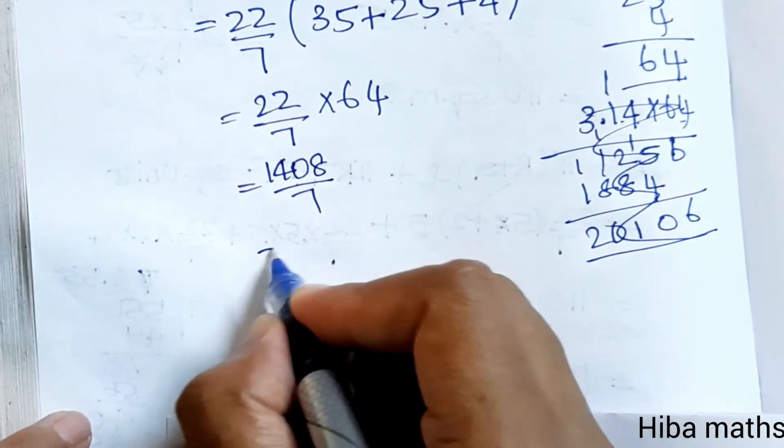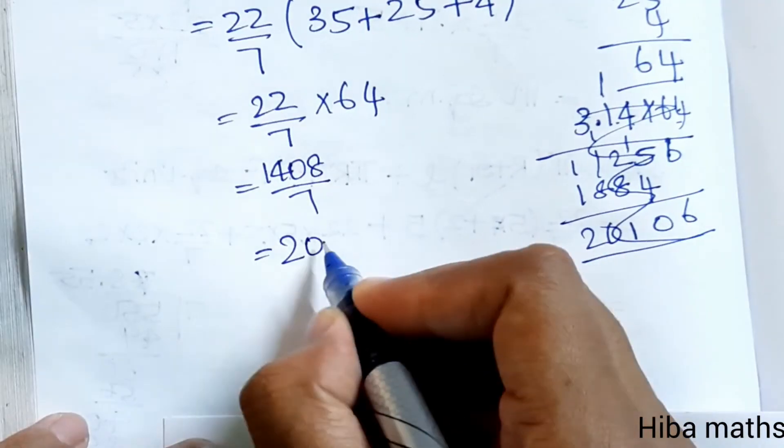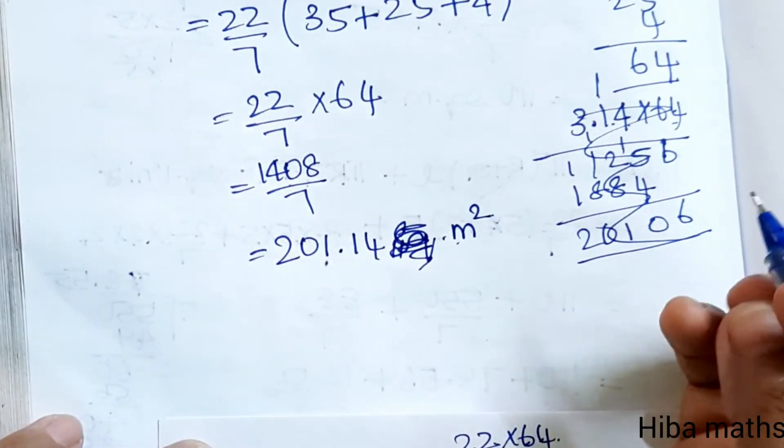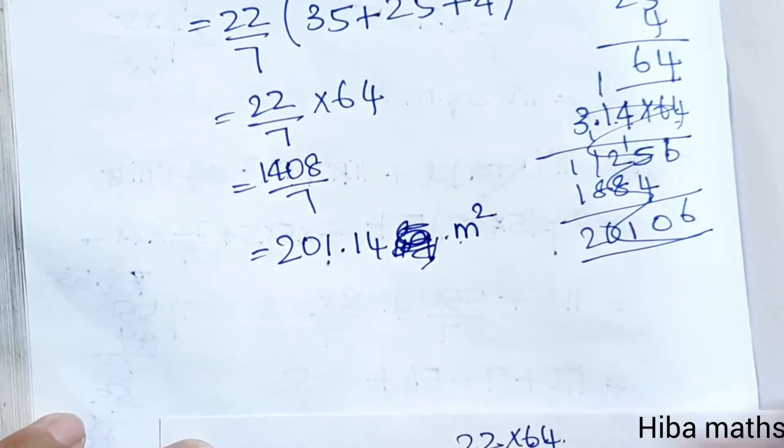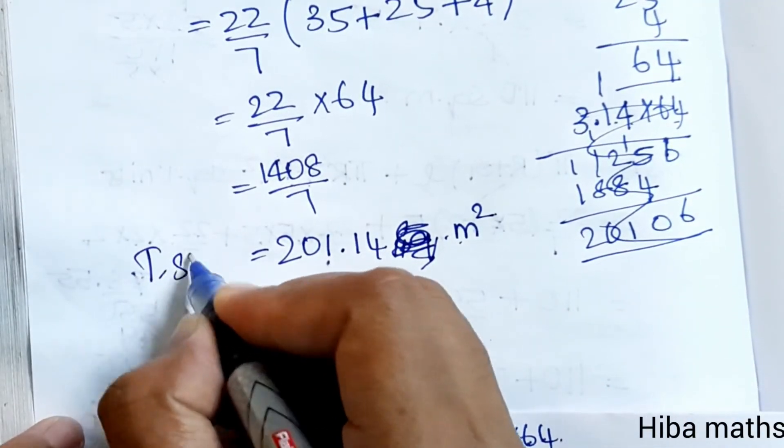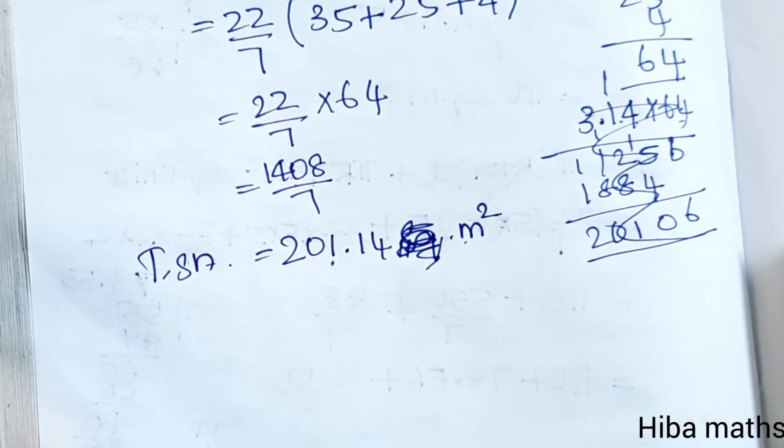Looking at the calculation, the answer is 201.14 meter square. This is the TSA value.